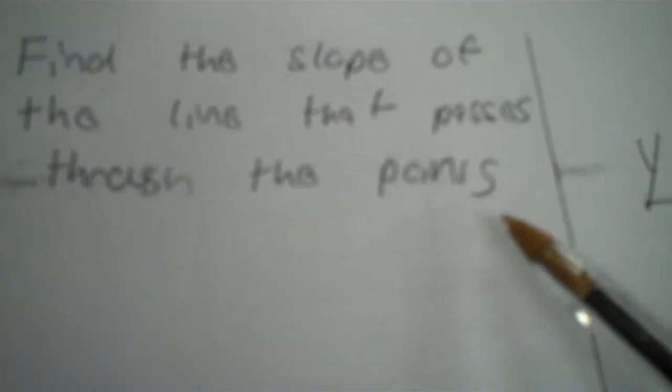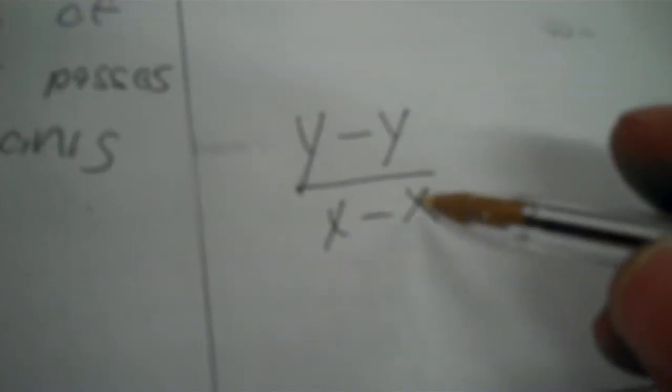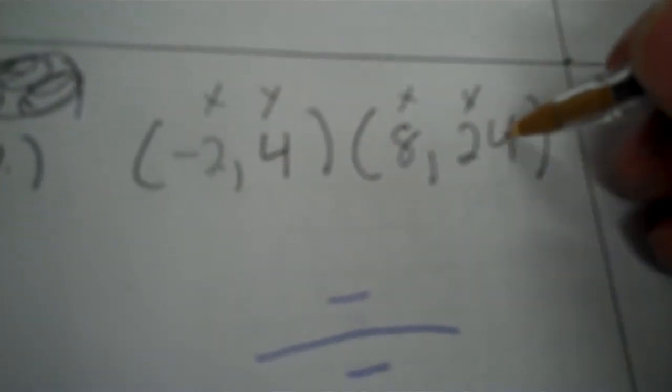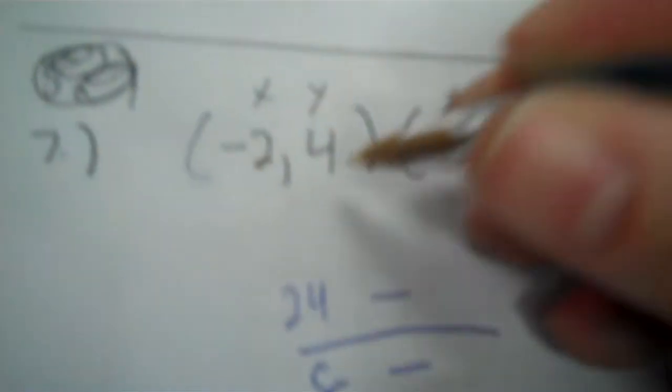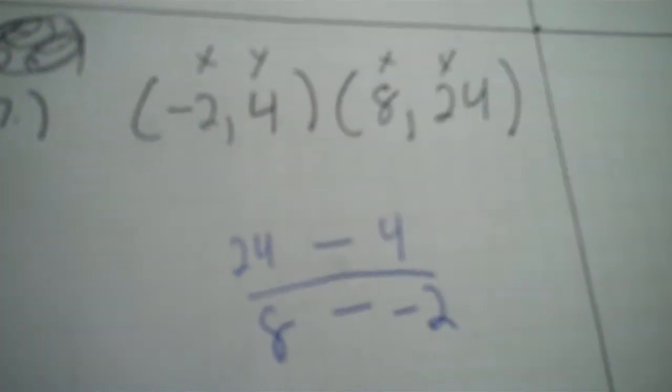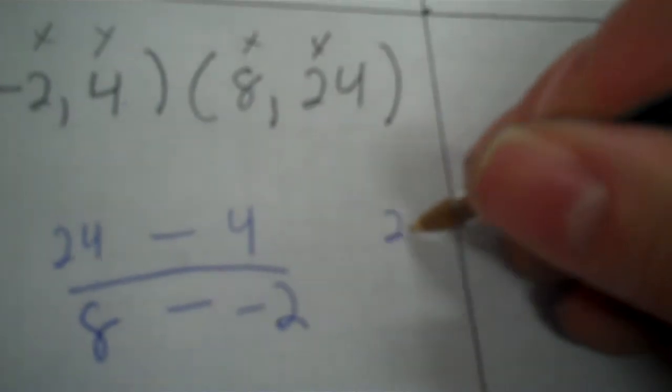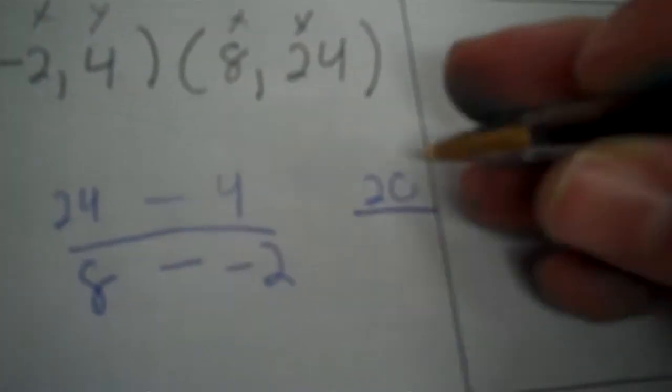So that works. Now on the next page, you're doing the same thing, but you don't have to graph it. Find the slope of the line that passes through the points. So that's what you're using: y minus y, x minus x. So 24 on top, 8 on bottom. Then 4 on top and negative 2 on bottom. So 24 minus 4 is 20. And then 8 minus negative 2 is 10. Now you need to divide, 20 divided by 10. I did not get a decimal, so 2 is the answer.